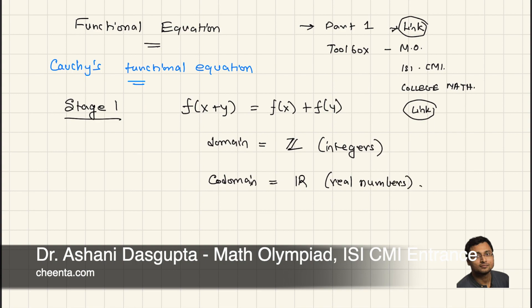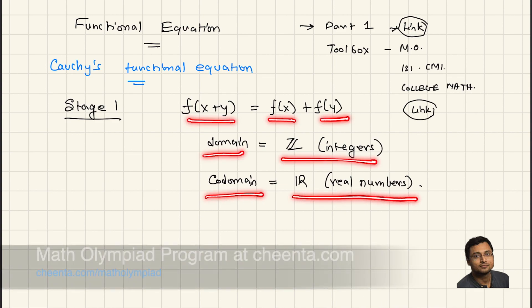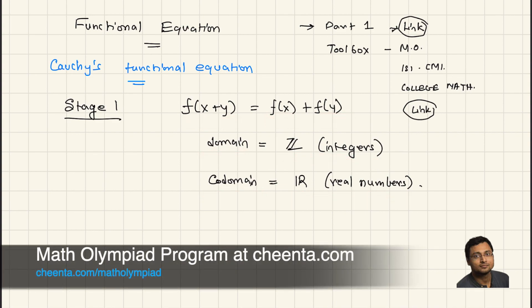So we want to find out functions which satisfies these three properties. f(x+y) = f(x) + f(y), the domain being integers, and the co-domain being real numbers.